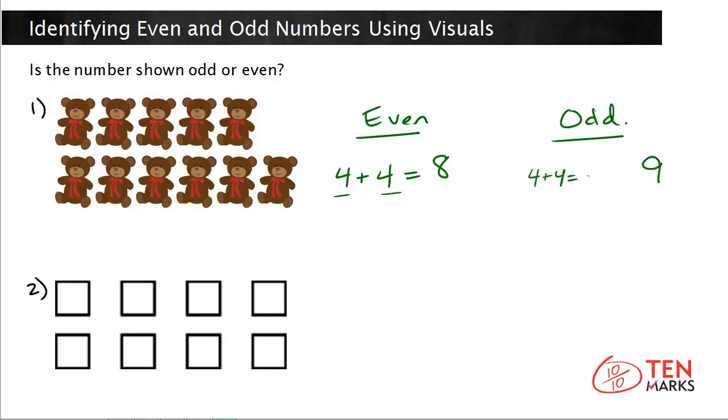So if you write 4 plus 4 you know that equals 8. Well that's less than 9. And the next number up is 5 plus 5 which equals 10 and that's greater than 9. So you can't write a doubles fact for an odd number which also means that odd numbers cannot be split into two equal groups.